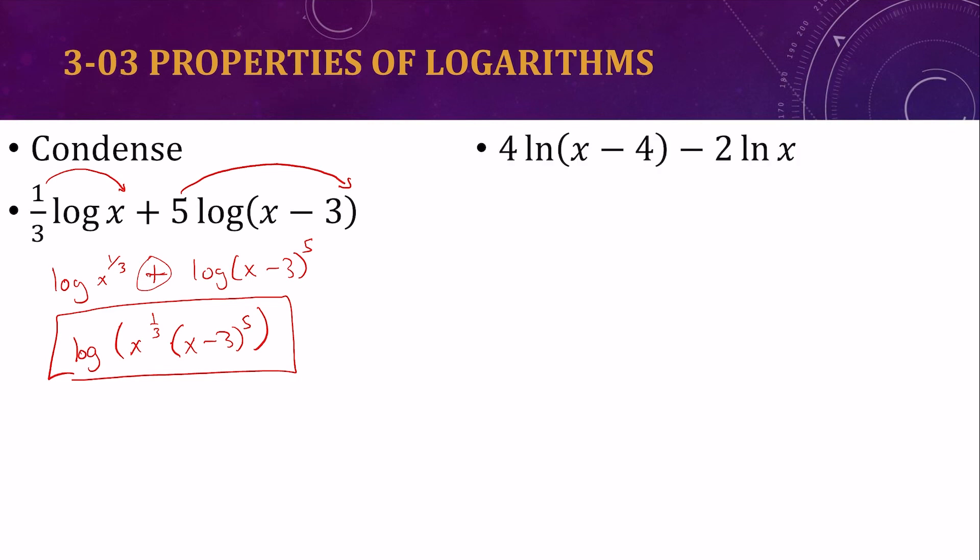Let's try another. Again, the numbers in front can go inside the logarithm as exponents. This will be natural log of x minus 4 to the fourth minus natural log of x squared. And now we're subtracting. So subtracting means it's dividing the single logarithm. So we'll have x minus 4 to the 4 over x squared inside the single logarithm.